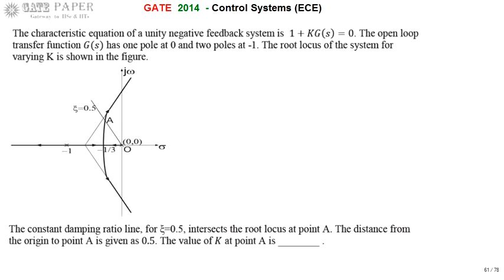We are discussing the GATE 2014 ECE paper. A root locus plot is given for a closed-loop system with unity negative feedback. The characteristic equation is 1 + K·G(s) = 0. From the root locus, we can find that the open-loop transfer function G(s) has a pole at the origin and a double pole at minus 1.